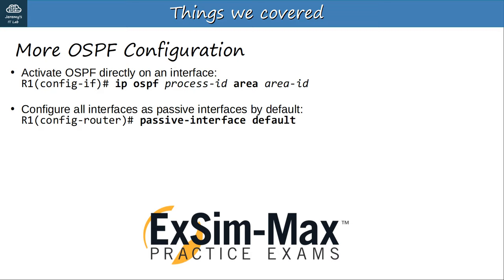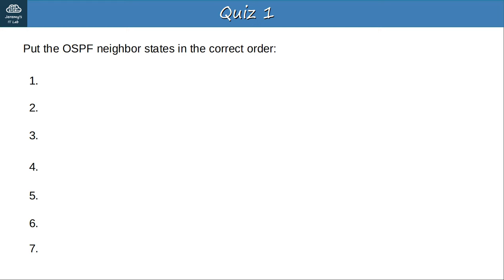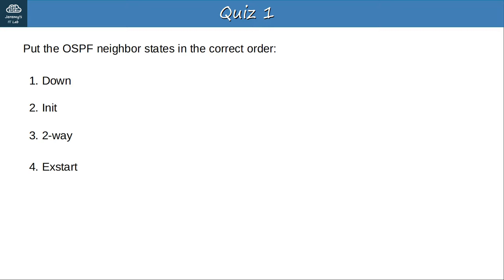Quiz question 1: Put the OSPF neighbor states in the correct order. The answer is: Down, Init, Two-Way, Xstart, Exchange, Loading, and Full. Go back in the video if you don't remember the order and purpose of each state.